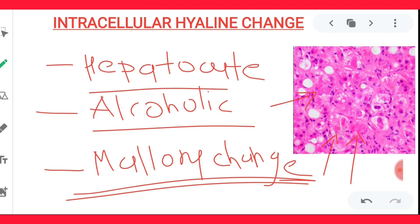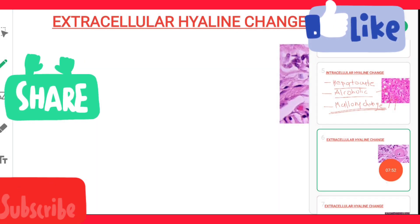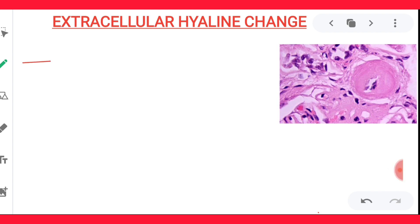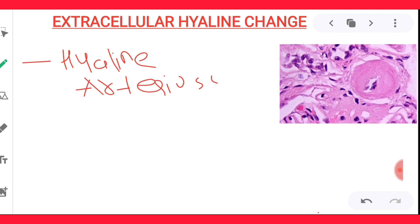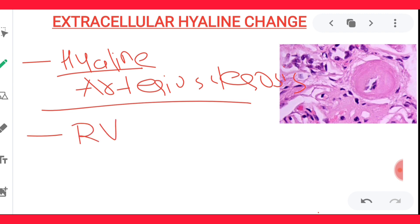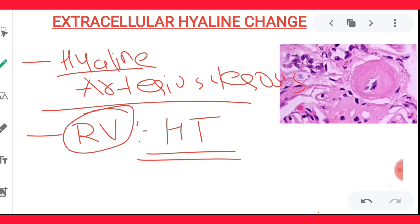Now we will see examples of extracellular hyaline change. The first example is hyaline arteriolosclerosis. In this condition, your vessel wall gets thickened with homogeneous hyaline material deposition. It is particularly seen in renal vessels in case of uncontrolled hypertension. So if you have uncontrolled hypertension, your renal vessels can get thickened with hyaline material deposition — that is known as hyaline arteriolosclerosis, and it is a most important MCQ. I have already taken a lecture regarding the effect of hypertension on blood vessels, so I request you to see that video also.